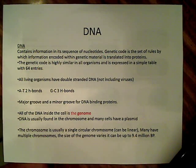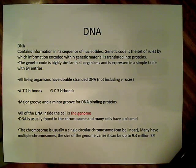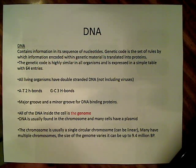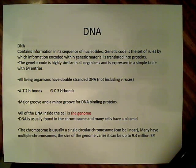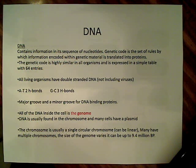The bacterial chromosome is usually a single circular chromosome, but it can also be linear — it's not always a single circular chromosome. Many bacteria have multiple chromosomes, and the size of the genome can vary. It can be pretty small, or fairly large, up to 9.4 million base pairs.